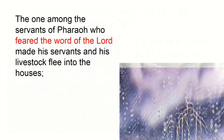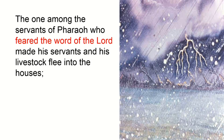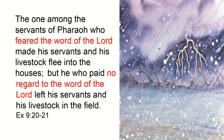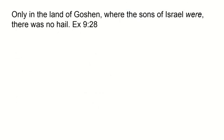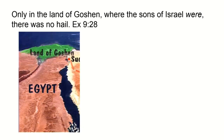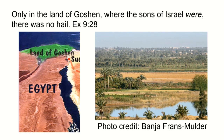Let me give you another example. The one among the servants of Pharaoh — back in Egypt before the Exodus — who feared the word of the Lord made his servants and livestock flee into the houses, but he who paid no regard to the word of the Lord left his servants and livestock in the field. Only in the land of Goshen, where the sons of Israel were, was there no hail. Goshen is where the Nile empties into the Mediterranean — a very lush area — and no hail fell there where the people of Israel were.